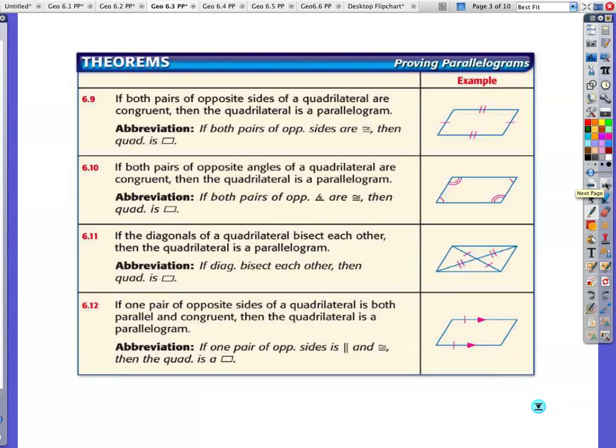All right, this is basically the converse of the rules that we've already covered. If both pairs of opposite sides of a quadrilateral are congruent, then the quadrilateral is a parallelogram. If both pairs of opposite angles of a quadrilateral are congruent, then the quadrilateral is a parallelogram. Make sure you've got this written in your notes, just this part would be fine.